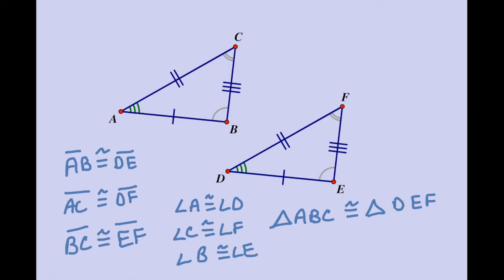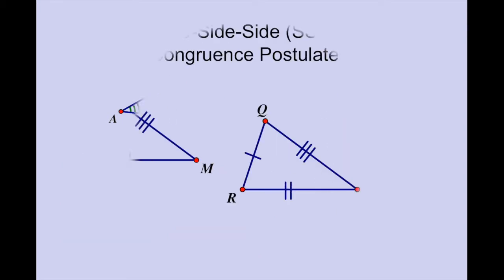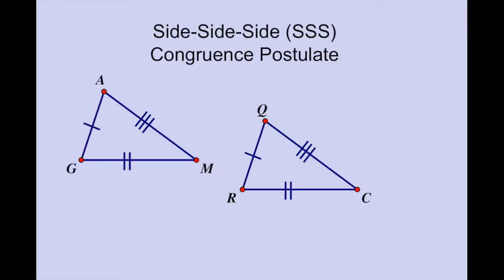If we have a four-sided figure, your list would be eight parts. If you had five-sided figures, your list would be ten parts — so it gets kind of tedious. Triangles, however, have shortcuts. Instead of getting a list of all six parts, we have certain combinations of sides or angles that allow us to take shortcuts to prove that triangles are congruent.